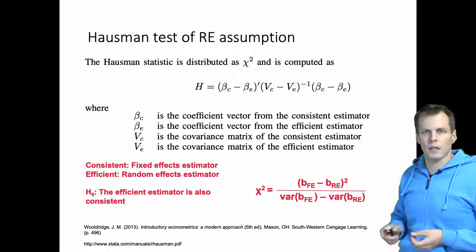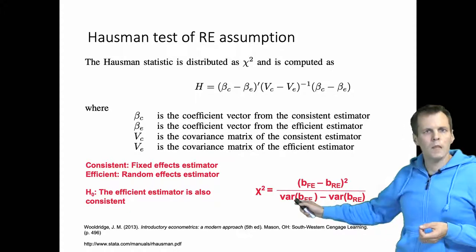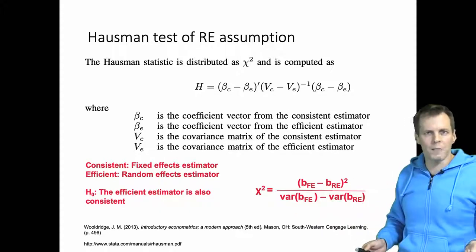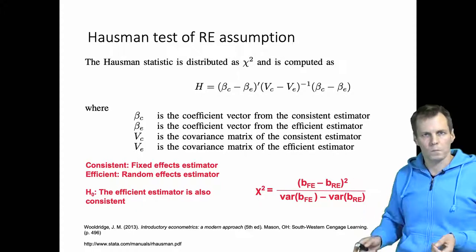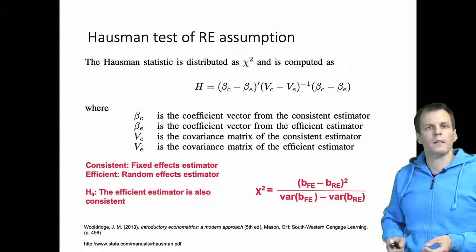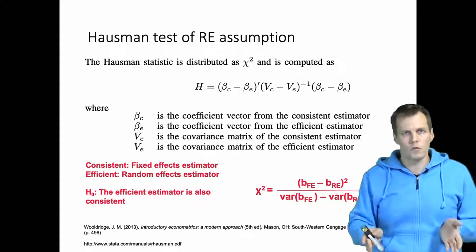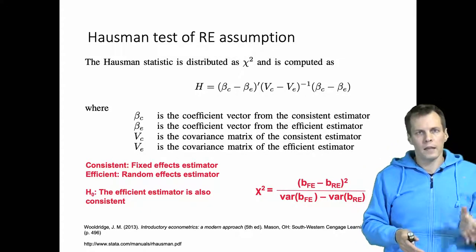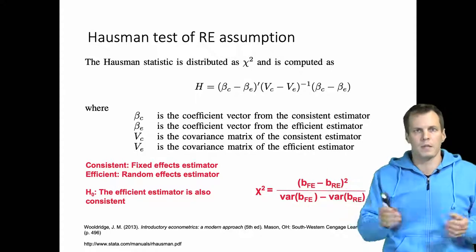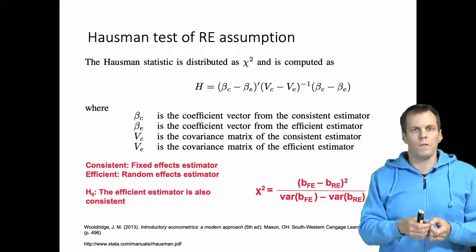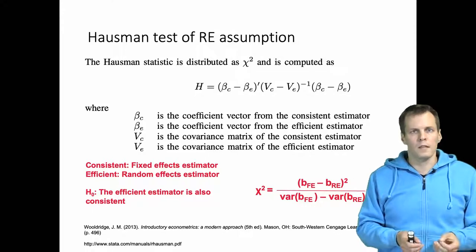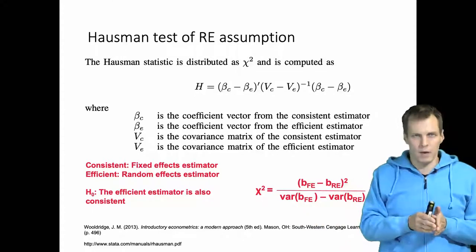This quantifies how much different the estimates can be expected to be because one is more efficient than the other — it quantifies the efficiency difference. The two estimates can differ for two reasons: one is that the fixed effects estimate is slightly less precise than the random effects estimate, and another is that if the random effects estimator is not consistent, it will not converge to the fixed effects estimator.